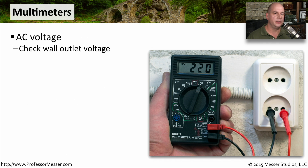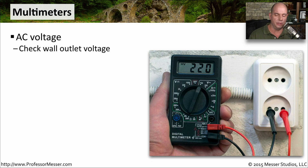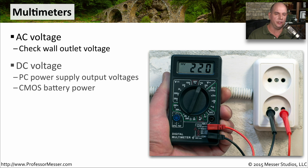Everyone should have a multimeter. It is a great all-around tool, not just for networking, but for use in your office and at home. It can check the voltage in an AC outlet and confirm that everything is wired properly and giving you the right amount of voltage. It can also check DC voltage — so if you're looking at a power supply in a computer or need to know if a battery has the proper charge, this is a great tool that will instantly tell you the voltages.